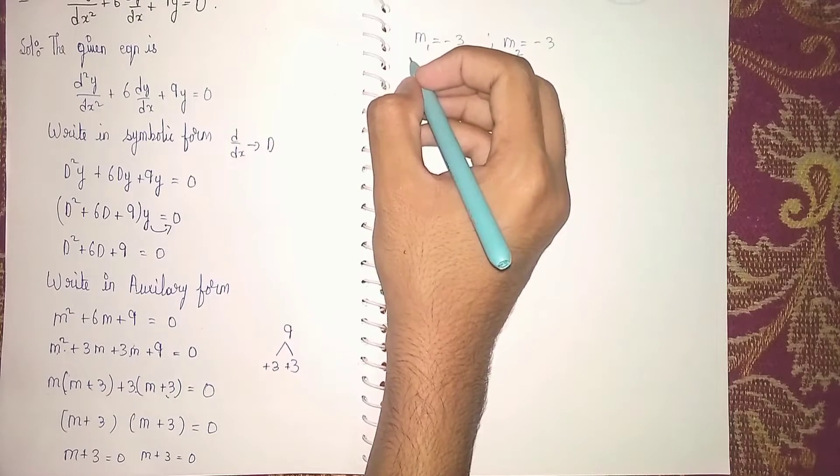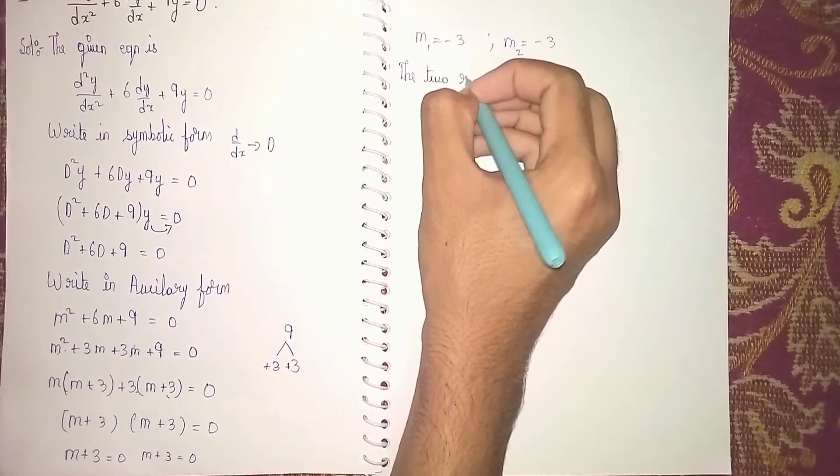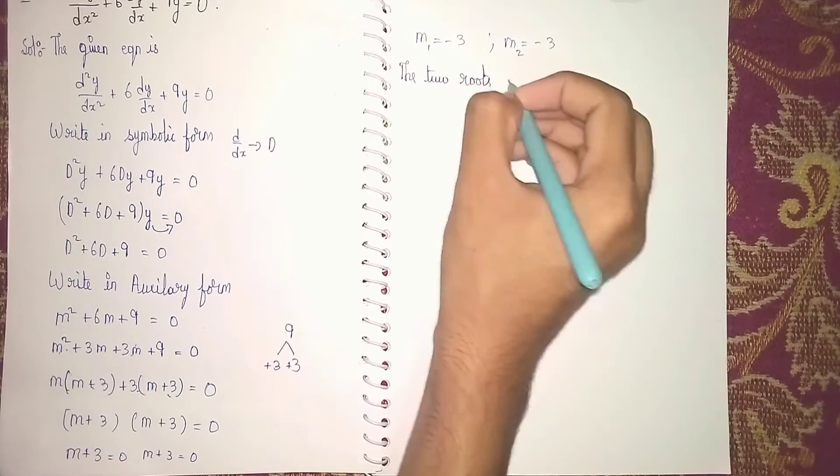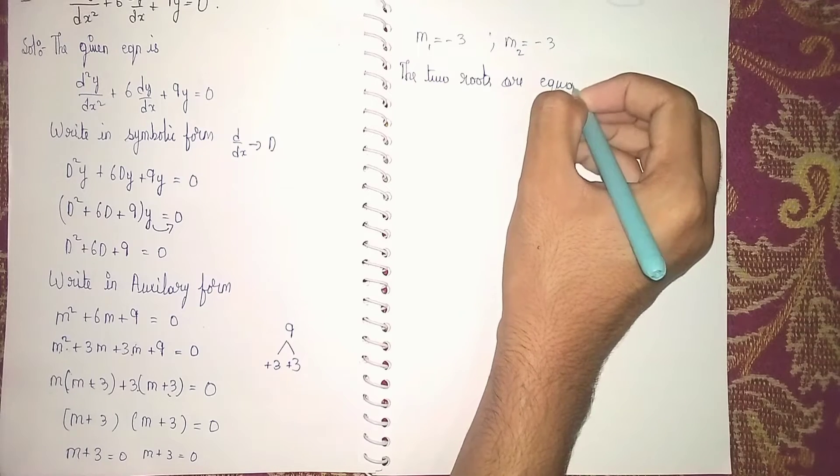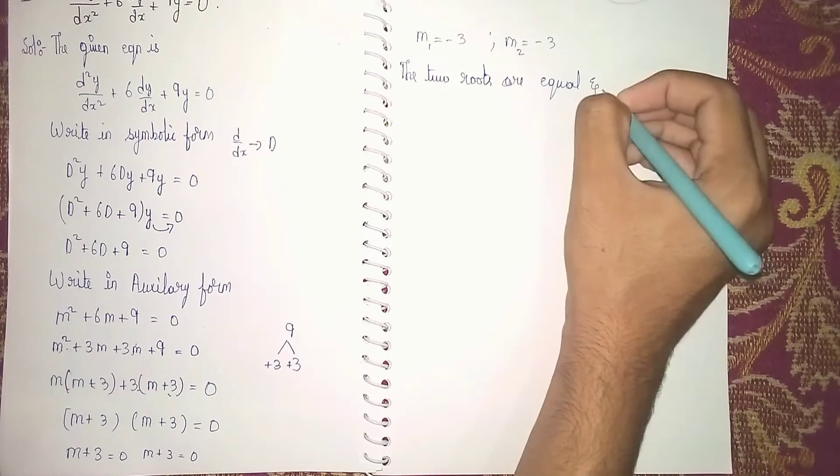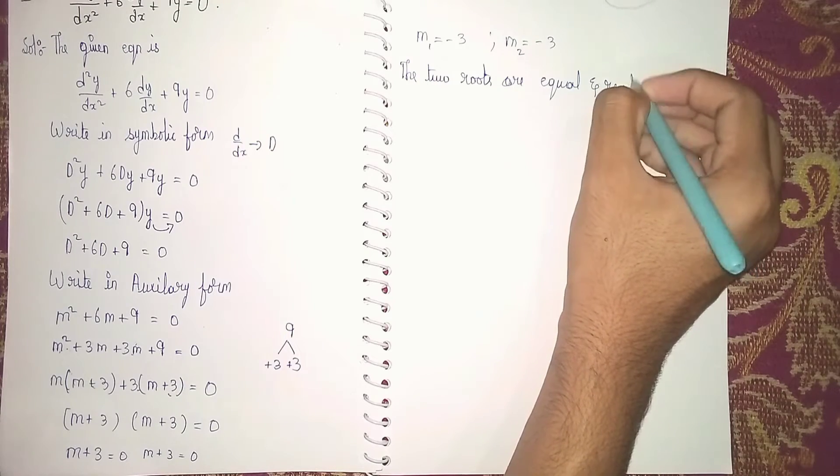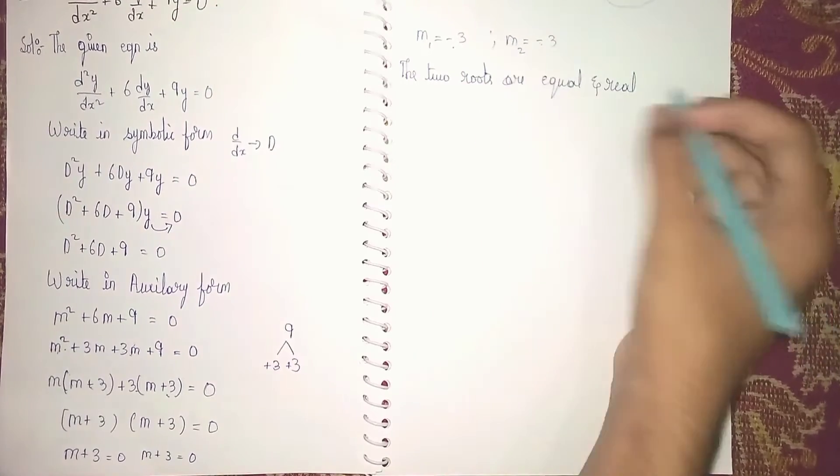So here we are observing that m₁ and m₂, we are getting the same values only. The two roots are equal and real. Real means real number. Equal means both we are getting the same: -3 and -3.